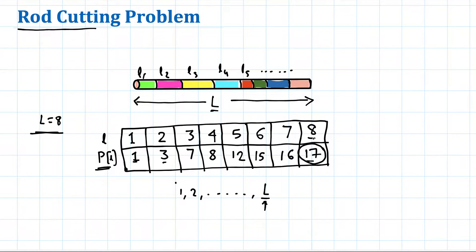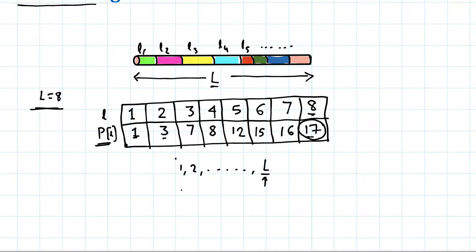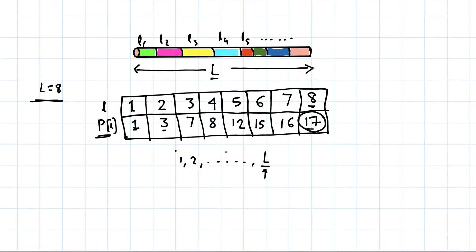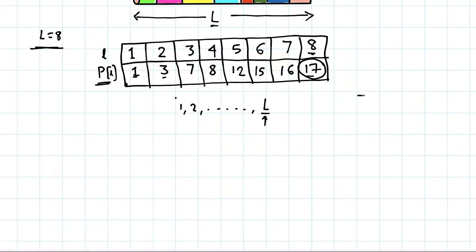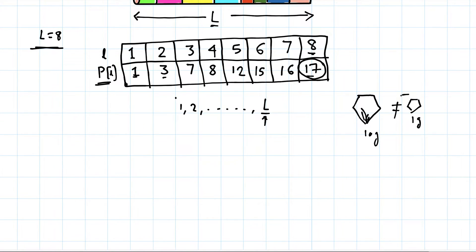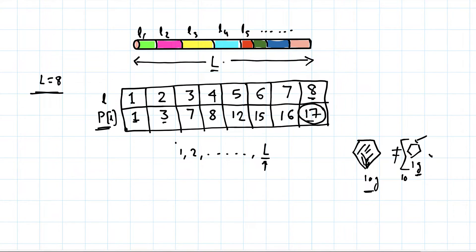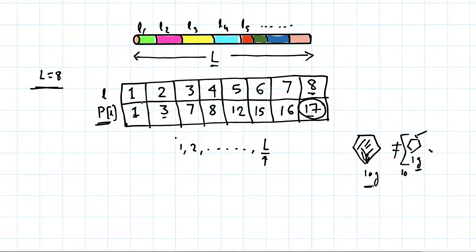We need to partition the rod in such a way that we get the maximum price. This is similar to the diamond business, where larger pieces of diamond have a higher price. If a diamond weighs ten grams, ten one-gram pieces will not sum to the price of the full ten-gram diamond, because smaller pieces are worth much less. Similarly, the price of the rod depends on its length and is not in an exact ratio to the length.